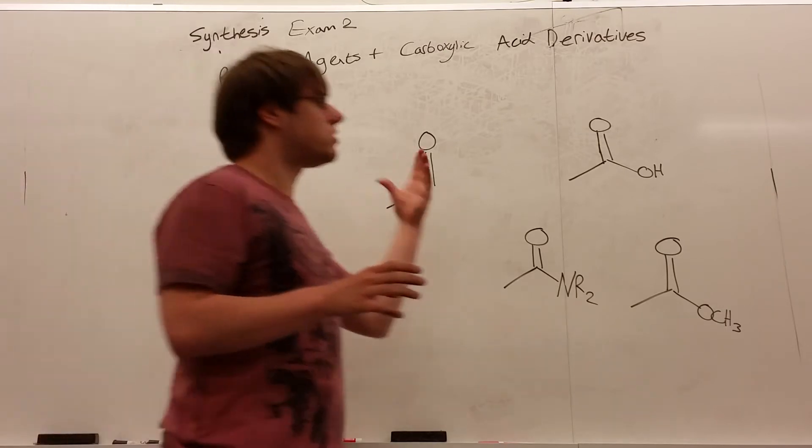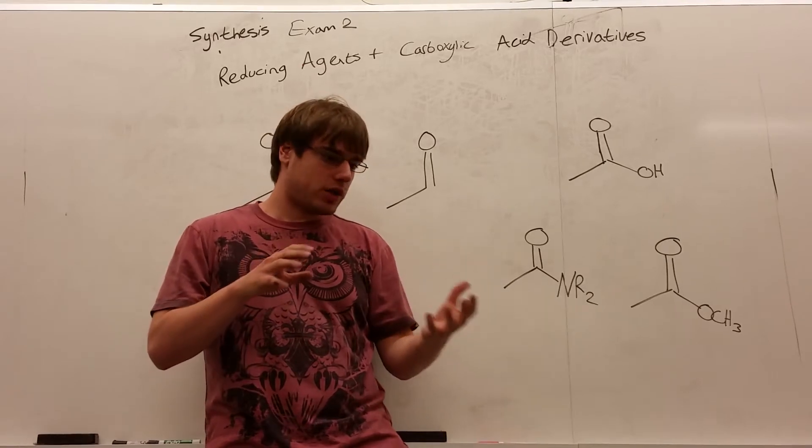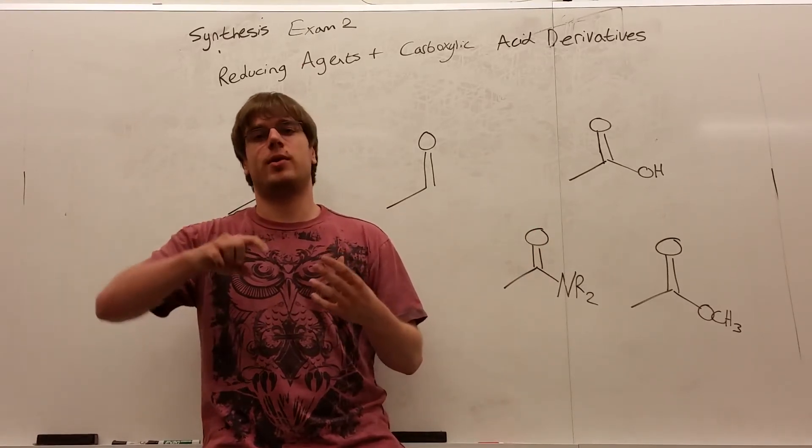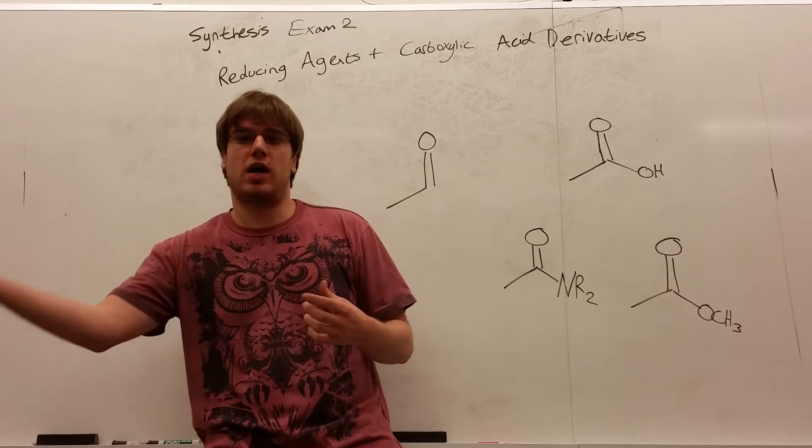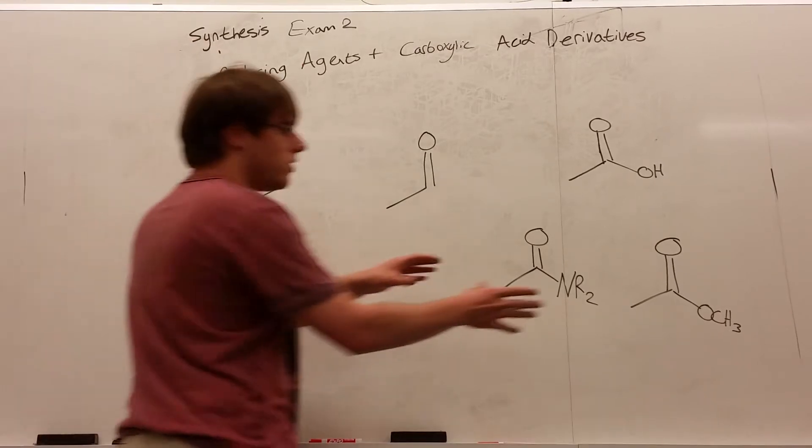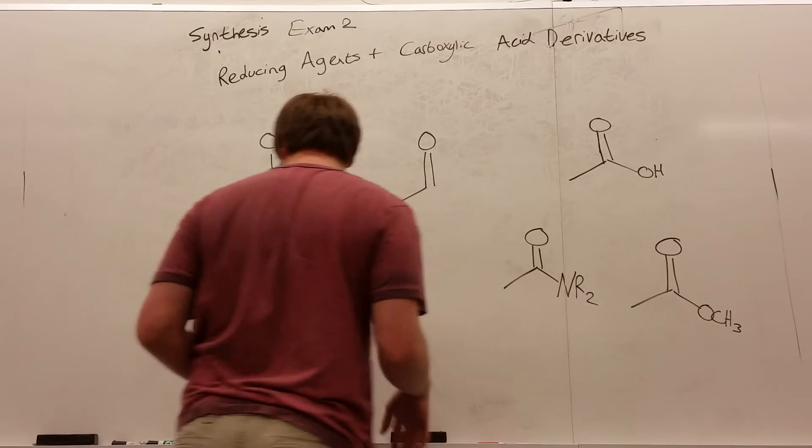So for the carboxylic acid derivatives part, I'm going to link in the description below a chart that shows all the back and forths of how you can turn a carboxylic acid into any of its derivatives and back again. But for now, I'm going to focus on the most common ones, which are the amide and the ester going back and forth between carboxylic acid.